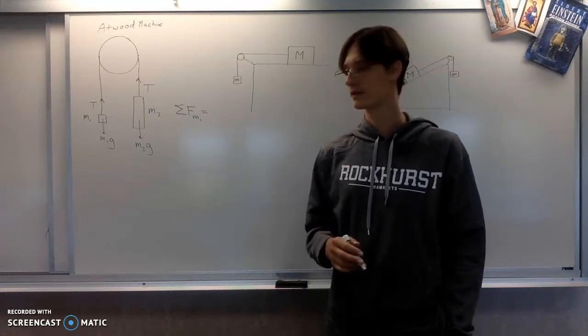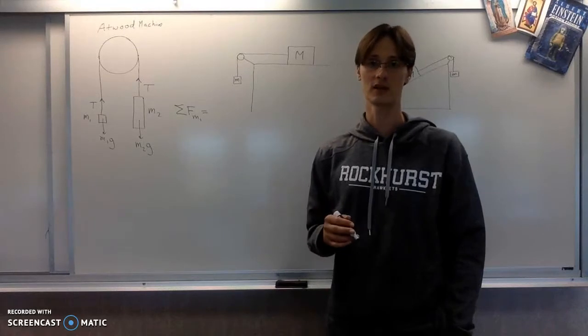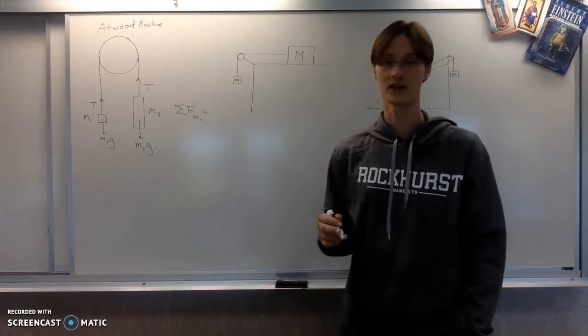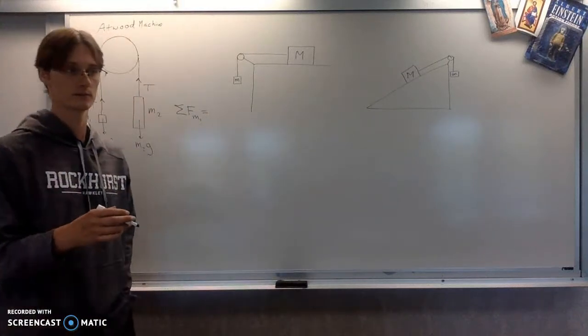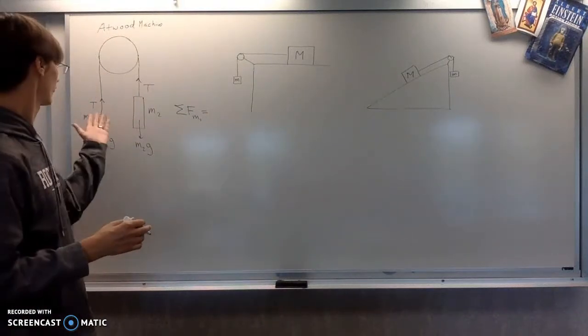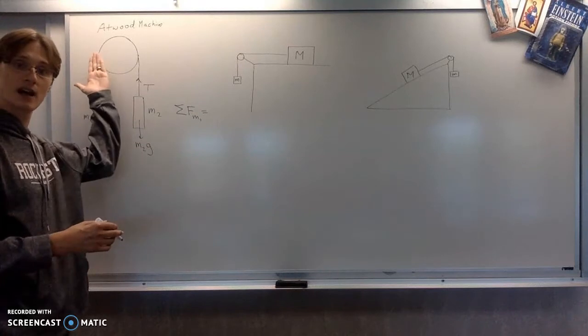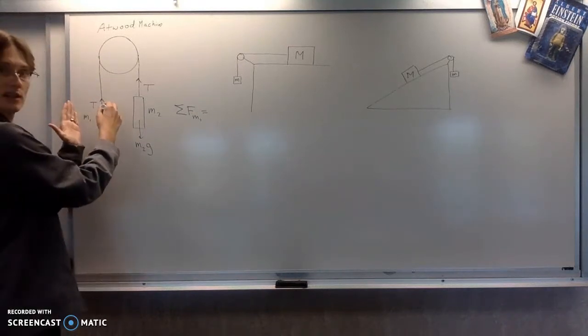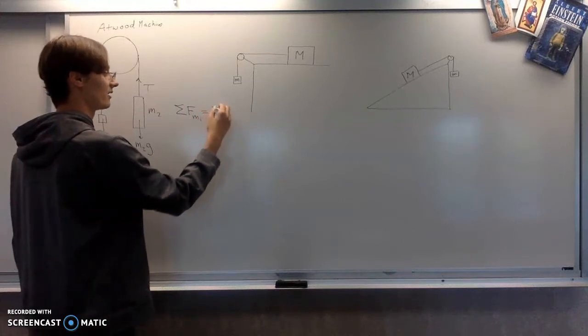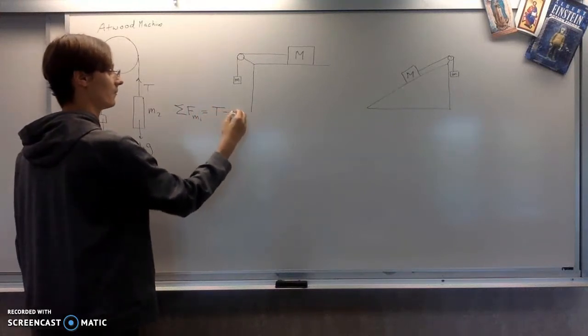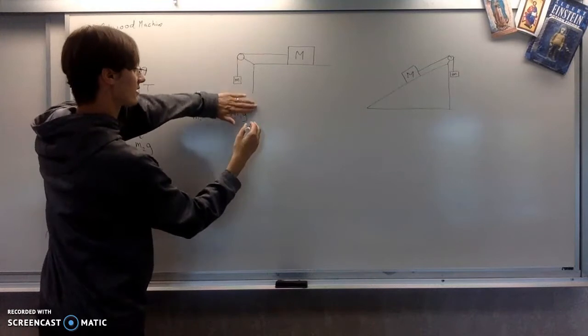So if it's moving in some direction, or accelerating rather, in that direction, then that must mean that that force must be the greater one. So for the first object, it's accelerating upwards, therefore the tension is greater than the weight. So we will say tension minus M1g equals M1a.